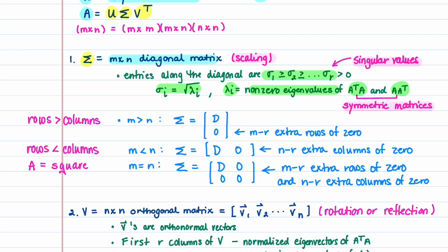Sigma sub i is the square root of lambda sub i, where lambda sub i are the non-zero eigenvalues of A transpose A and A A transpose. These two matrices are symmetric and have the same non-zero eigenvalues. If A has more rows than columns, sigma contains a diagonal matrix and then m minus r extra rows of zero. If A has more columns than rows, sigma contains a diagonal matrix and n minus r extra columns of zero. If A is square, sigma has both extra rows and columns of zero.